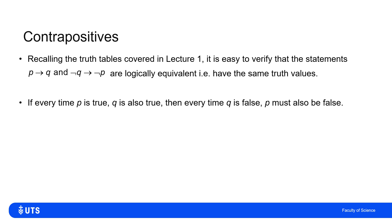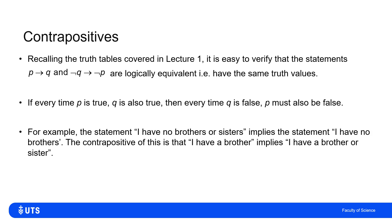So 'not q' is implying 'not p'. To get a little less abstract: if I have the statement 'I have no brothers or sisters' — call that p — then q can be the statement 'I have no brothers'. If somebody tells me they have no brothers or sisters, I know they have no brothers.